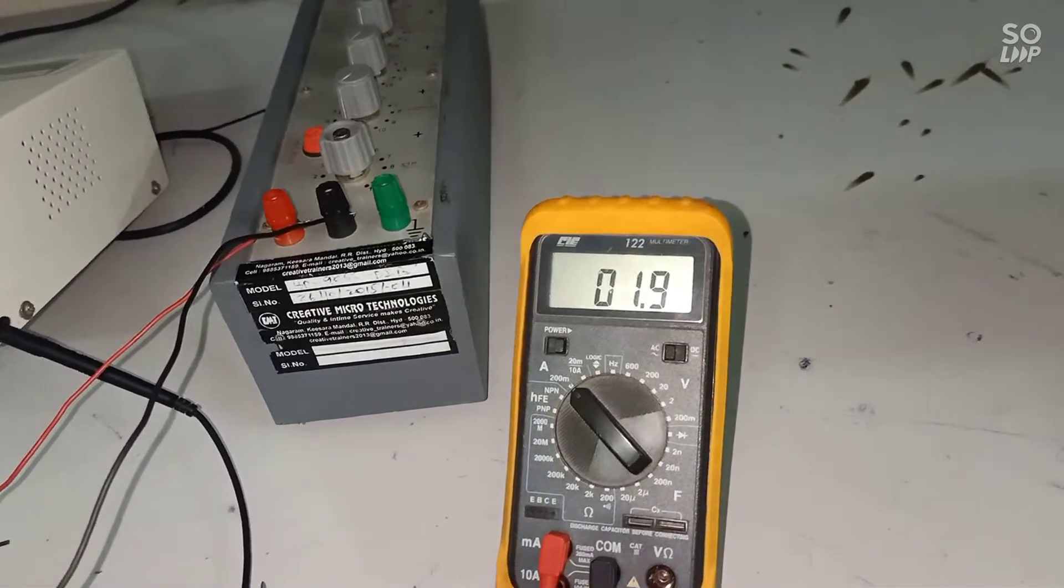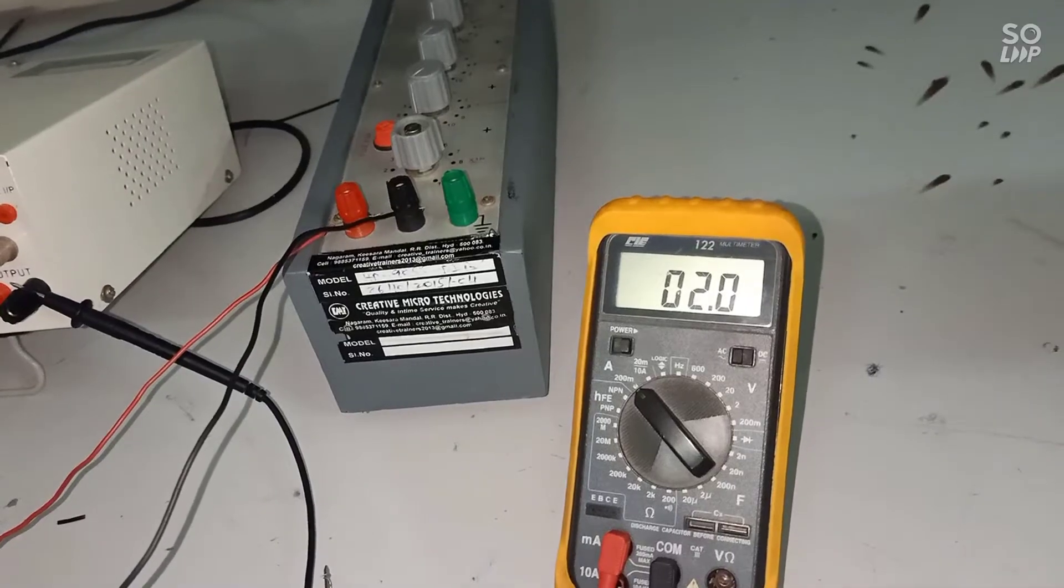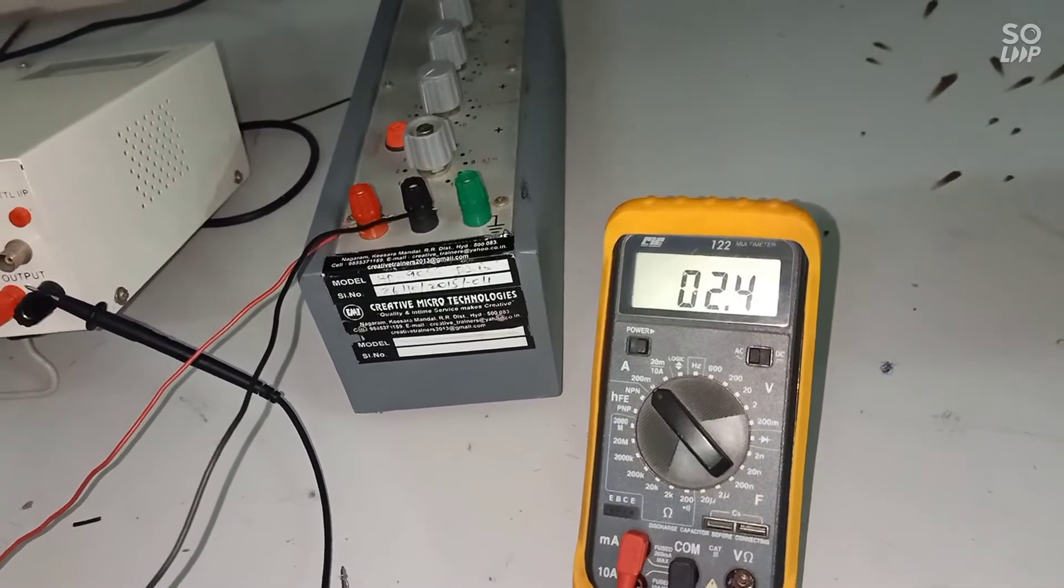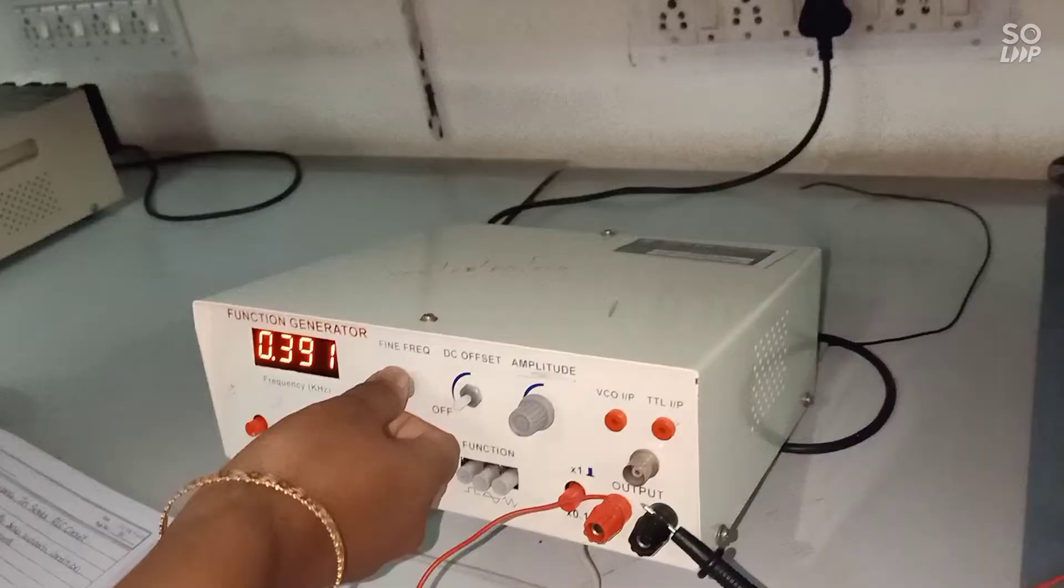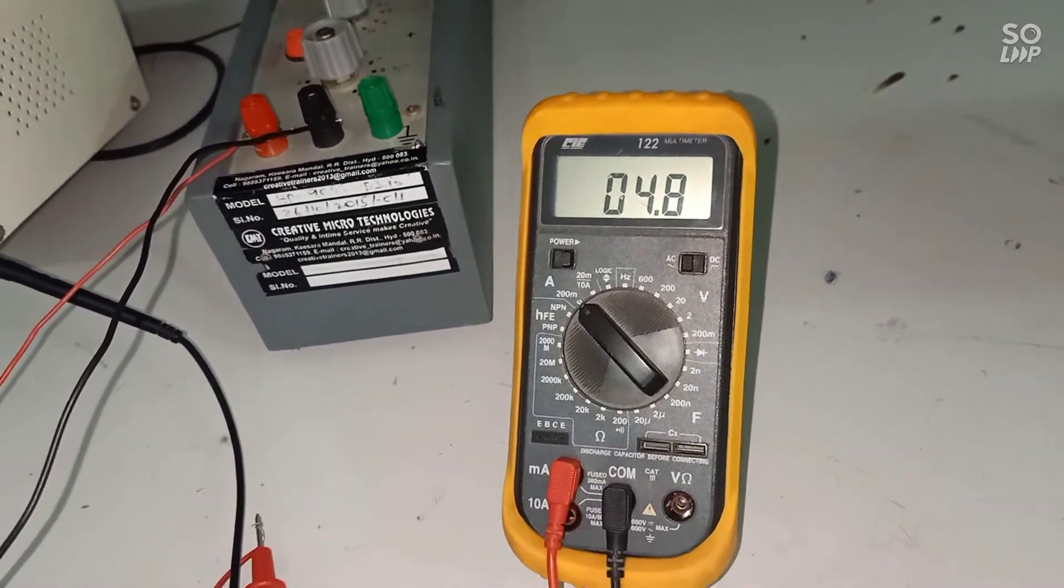Note down the reading of the current. Similarly increase the frequency. You can increase the frequency up to 1000 hertz and note down the corresponding readings of the ammeter.